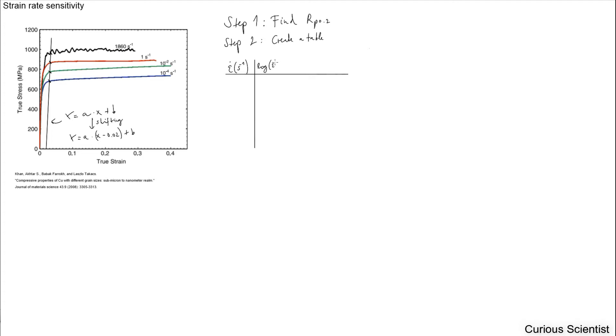I don't write the units here. Then we have the yield strength as well, so this is RP 0.2, and this is MPa. And then we also take the logarithm of this, and I will tell you later why.